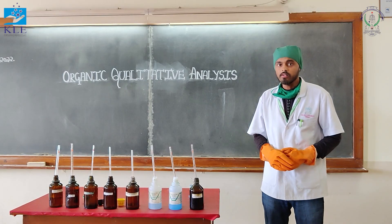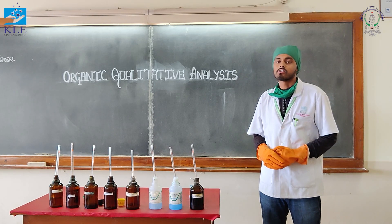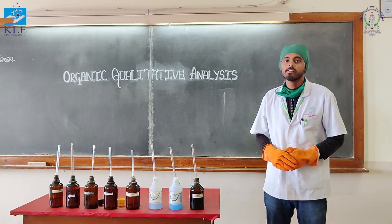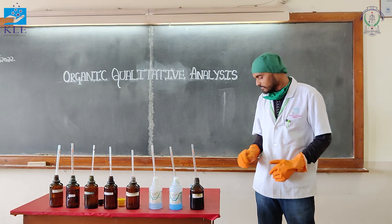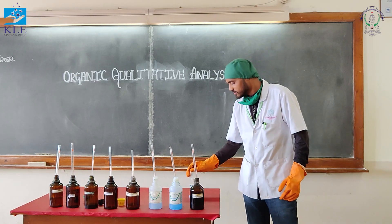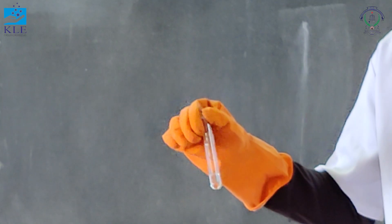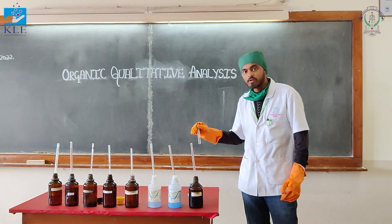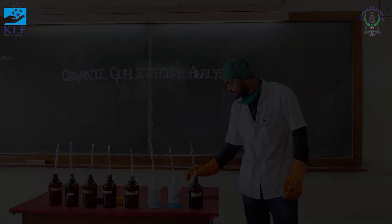The next test is for halogen. Take the stock solution and add HNO₃ and AgNO₃. There is no precipitate. Therefore, halogen is absent.